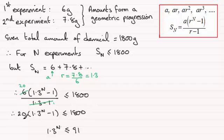If I divide both sides by 20, I'm left with 1.3 to the power N minus 1 is less than or equal to 1,800 divided by 20, which is 90. So if I add 1 to both sides, I end up with 1.3 to the power N is less than or equal to 91.